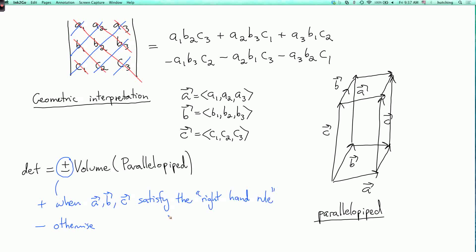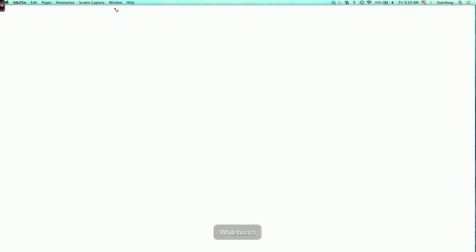And it's minus otherwise. So an example where they don't satisfy the right hand rule, it would be if a goes like this, and b goes like this, and then c goes down like that.